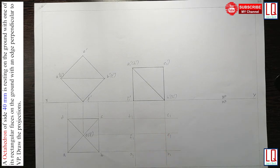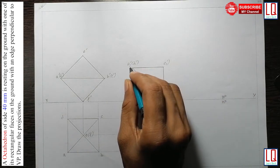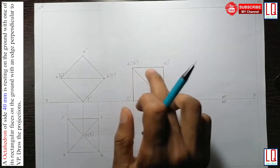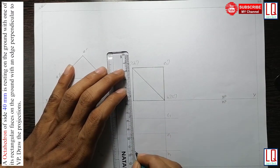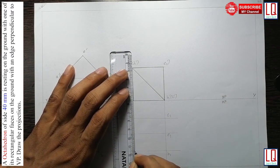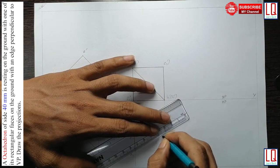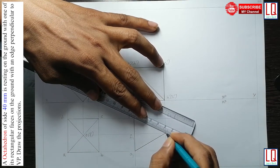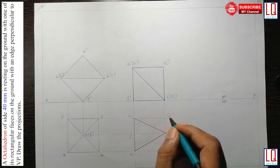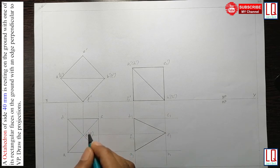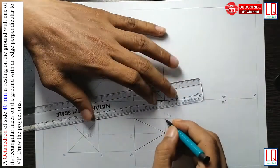To draw step 4, we see step 3 from the top view. Triangle A, D, E is visible from the top, so connect it with a continuous HB pencil line. Similarly, triangle D, C, E is also visible from the top view — connect with HB pencil. Triangle A, B, E is also visible from the top view, so connect with HB pencil.